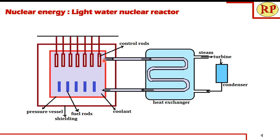Now let us look at the outline of the light water nuclear reactor. We have a reactor core, which is the heart of the reactor, comprising fuel rods, control rods, coolant, and moderator. Fuel rods are mainly made from enriched uranium, that is uranium-235, formed into rods and placed uniformly inside the nuclear reactor so that heat generation is also uniform throughout and not concentrated at any one point, which could lead to explosion.